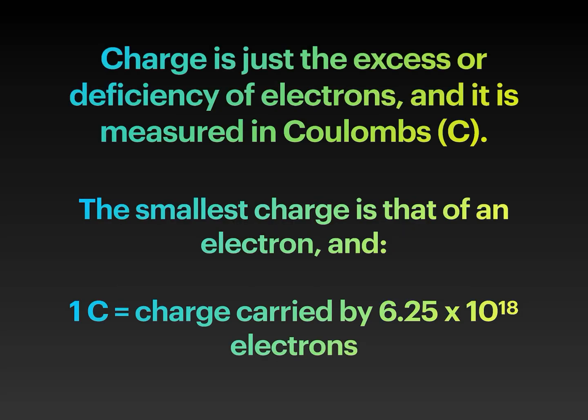Charge is just the excess or deficiency of electrons, and it is measured in coulombs. The smallest charge is that of an electron, and one coulomb equals the charge carried by 6.25 times 10 to the 18 electrons. That is a big number. Now, without further ado, let's get to those experiments.